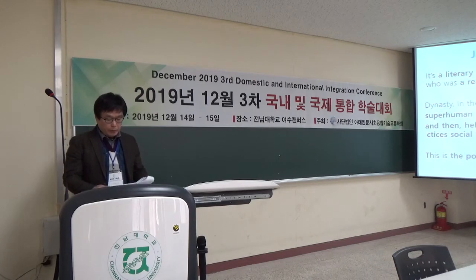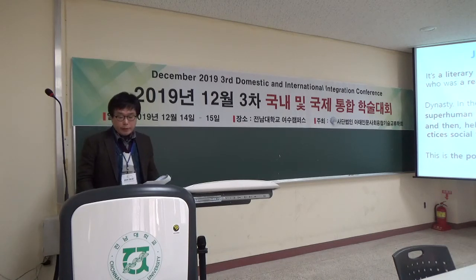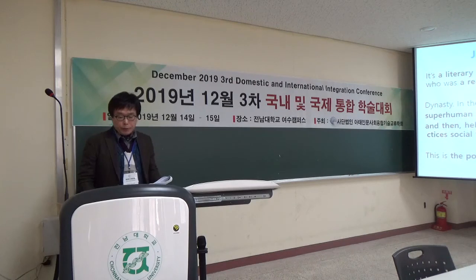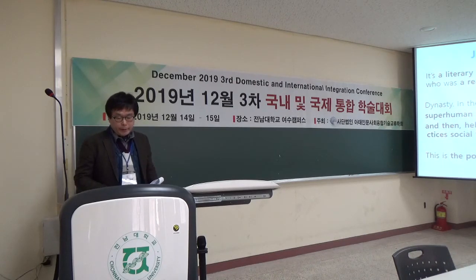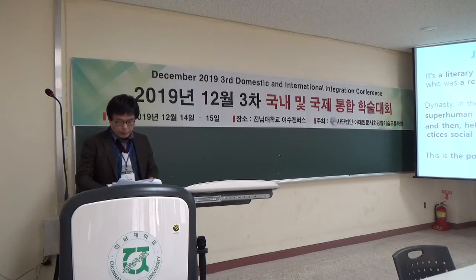Let me explain. Jeon Uchi is a literary work featuring a story about Jeon Uchi, who was a real figure in the Joseon dynasty. But in the novel, Jeon Uchi acquired superhuman ability through Taoist magic, and used that ability to help and save people and practice social transformation for social justice. This is the positive narrative about Jeon Uchi.